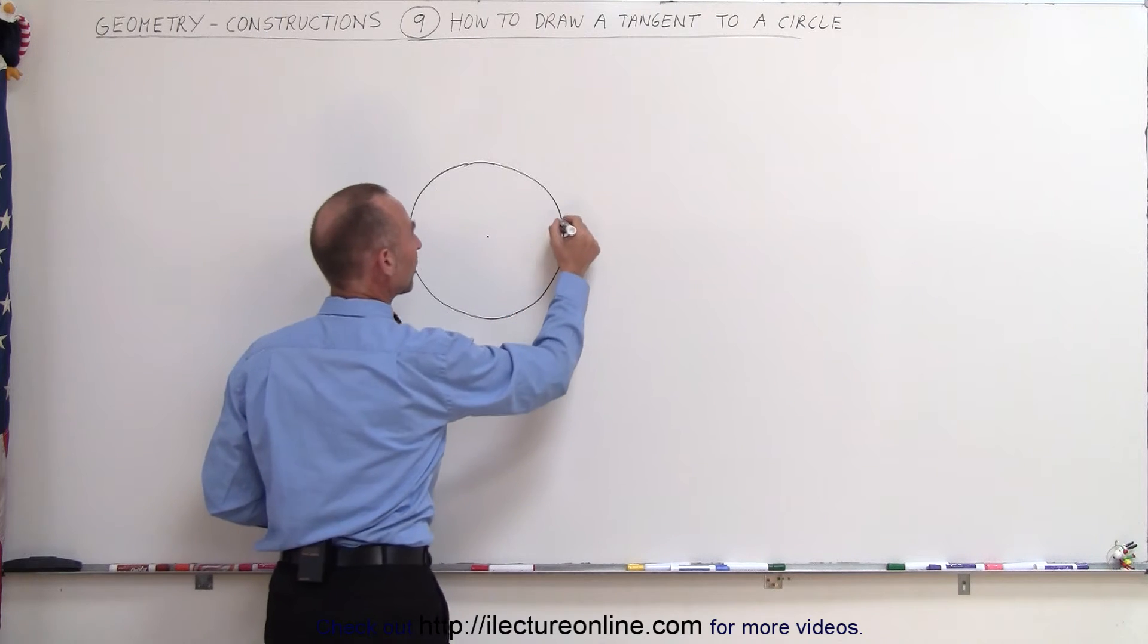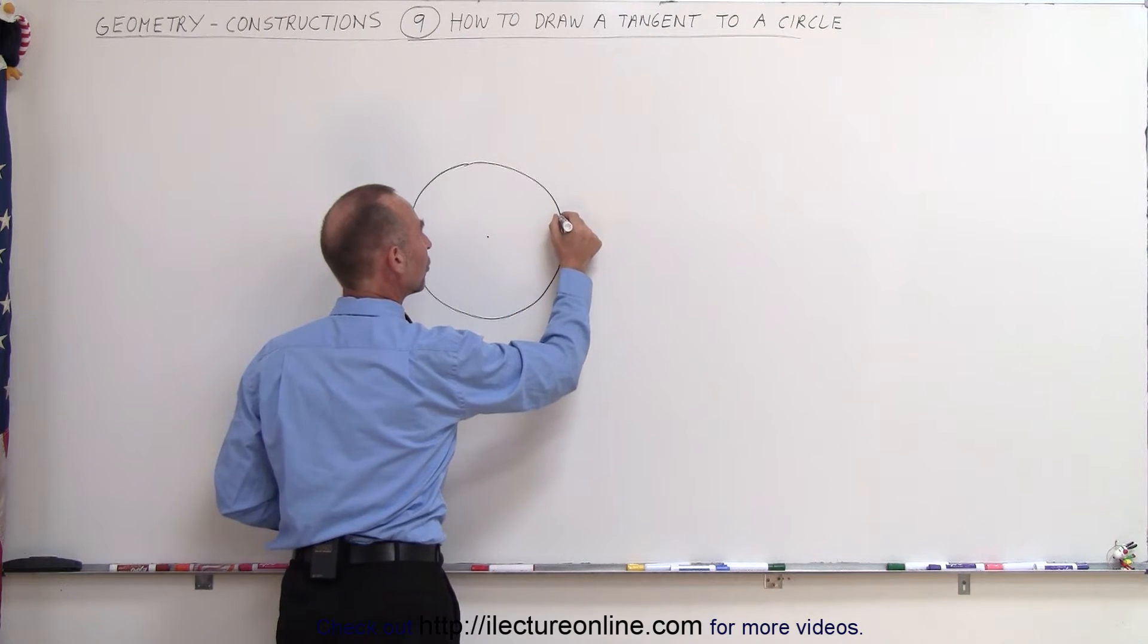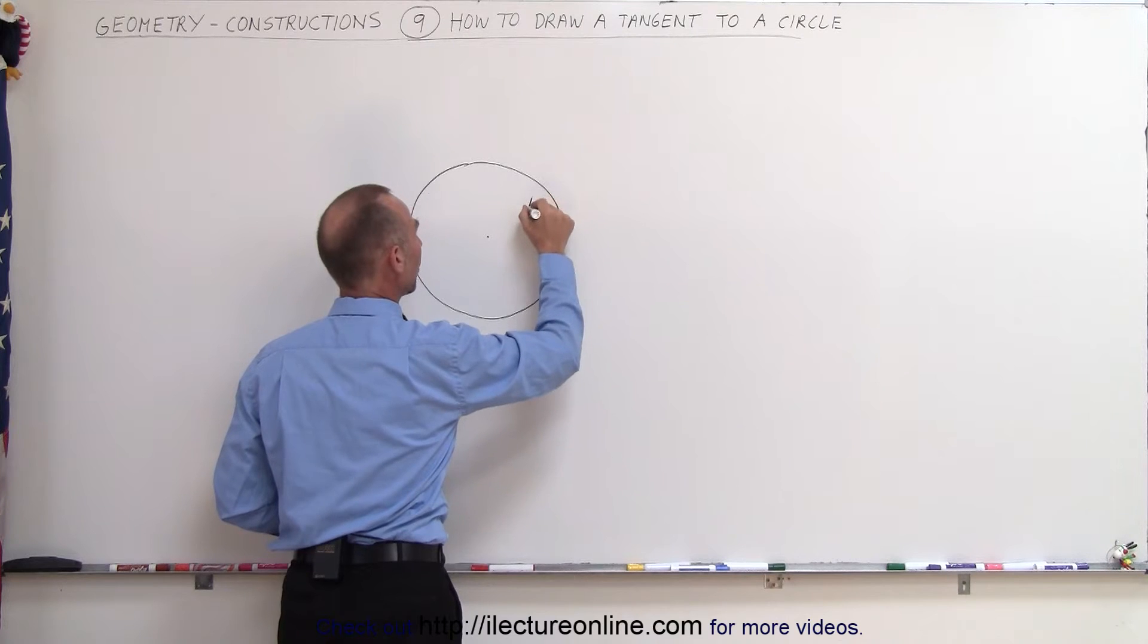And let's say that we want to draw a tangent line to the circle through this point right here. And let's call that point, point A.